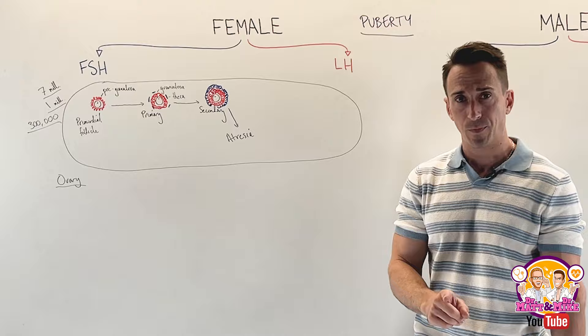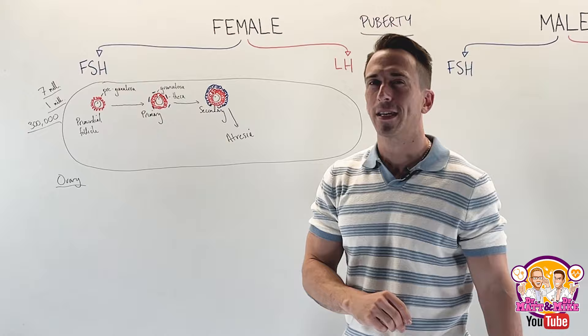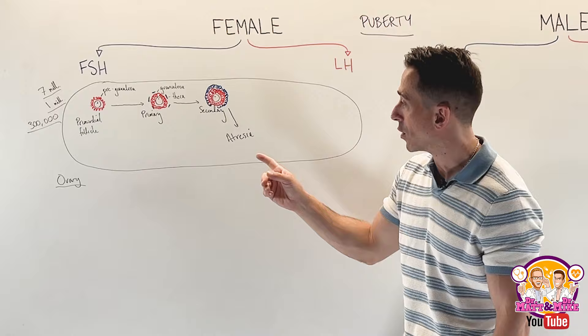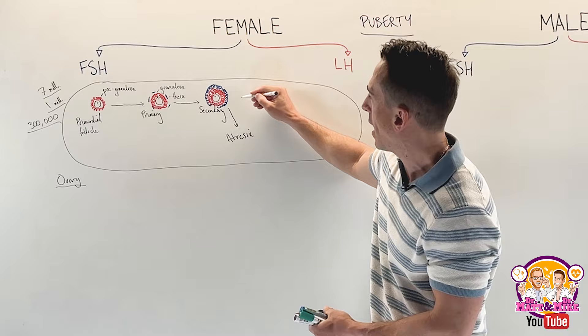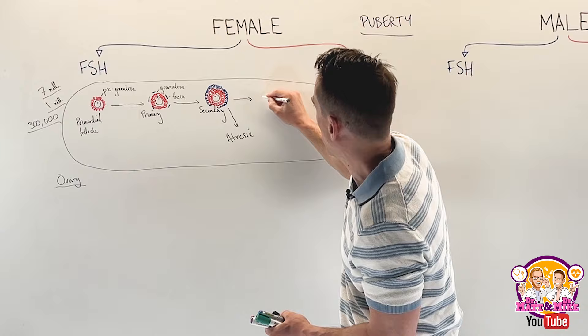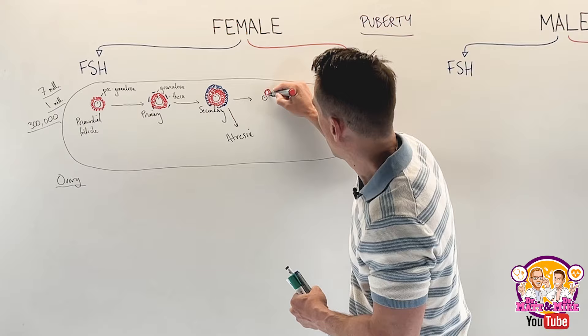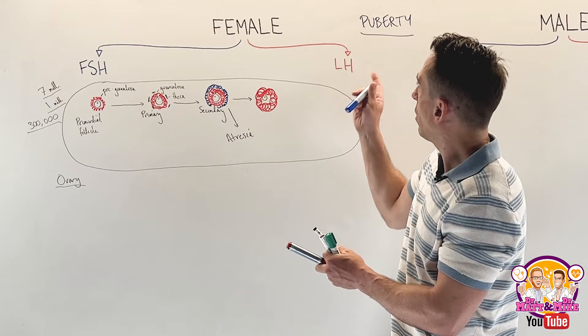What's actually correct is that folliculogenesis is already happening. Once puberty hits and FSH gets released, FSH will select one — and sometimes more — follicles to not undergo atresia. FSH deselects the biggest follicle that's been made so far and says: don't undergo atresia, I want you to further develop. That means it will continue developing more granulosa and theca cells. So now we're talking about puberty.